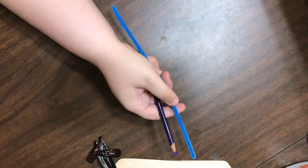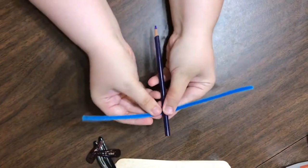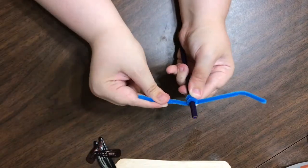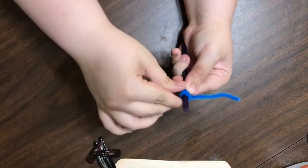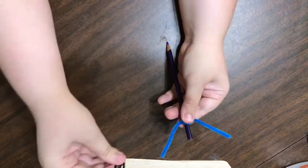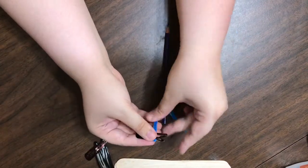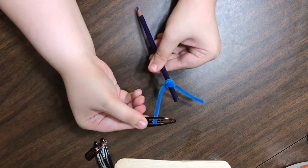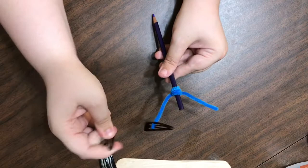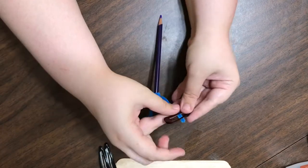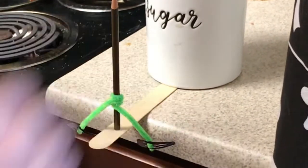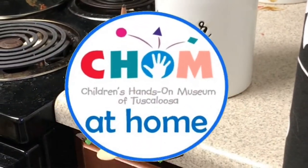Start by twisting the pipe cleaner around the pencil. Try to make both sides even lengths. Attach a hair clip to the end of each side. The popsicle stick will act as our tightrope. Prop it up somewhere where it won't fall down. It's time to balance your acrobat. Adjust the pipe cleaner and hair clips until you get that perfect balance.